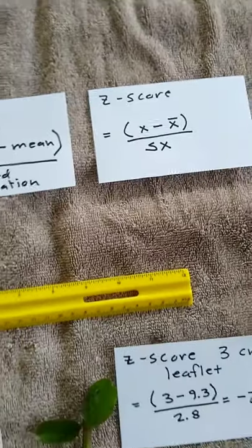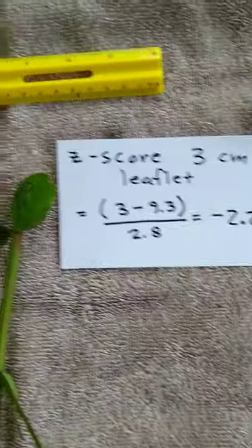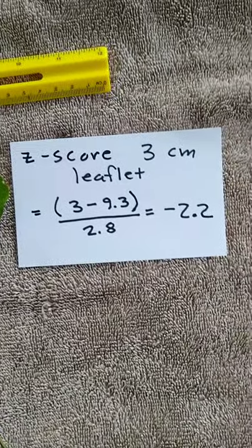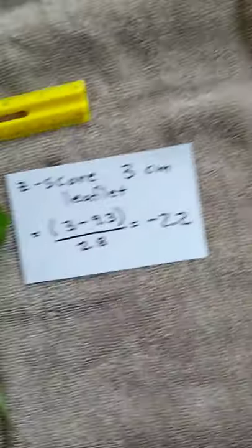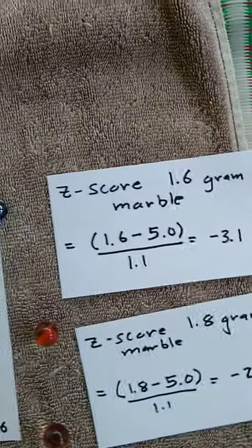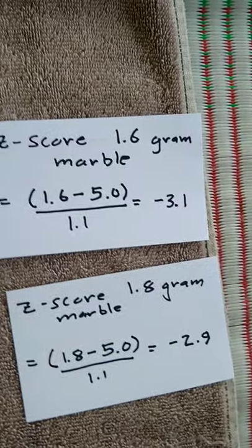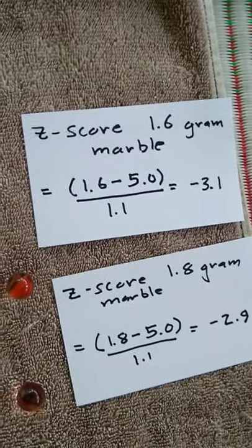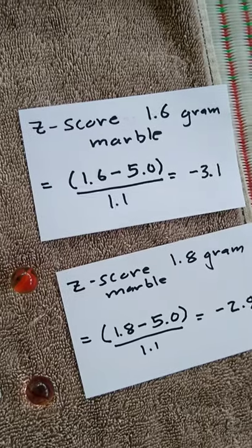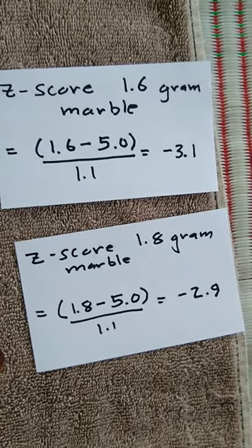If I do that for the ones I'm interested in, the z-score for the 3 centimeter leaflet is negative 2.2. 3 minus 9.3 divided by 2.8. The z-score for the marbles, the 1.6 gram marble has a z-score of negative 3.1. That means it's 3.1 standard deviations below the mean. Both of these cases are below the mean, so they have negative z-scores. Data below the mean always has a negative z-score. The 1.8 gram marble has a z-score of negative 2.9.